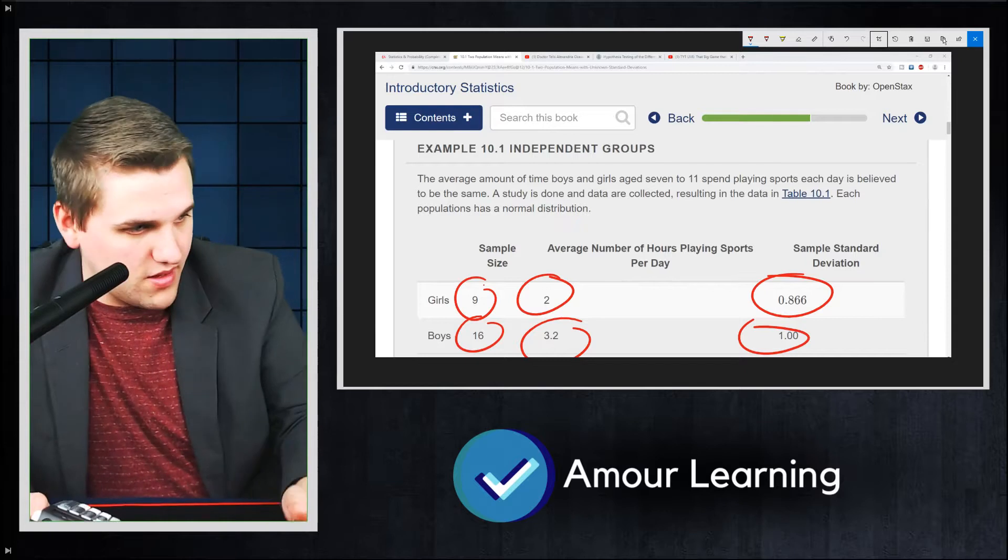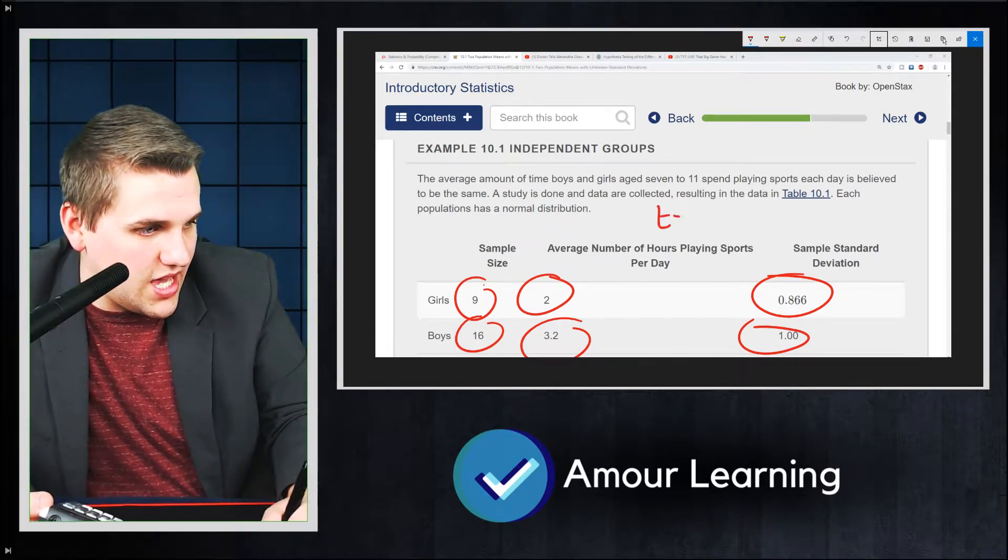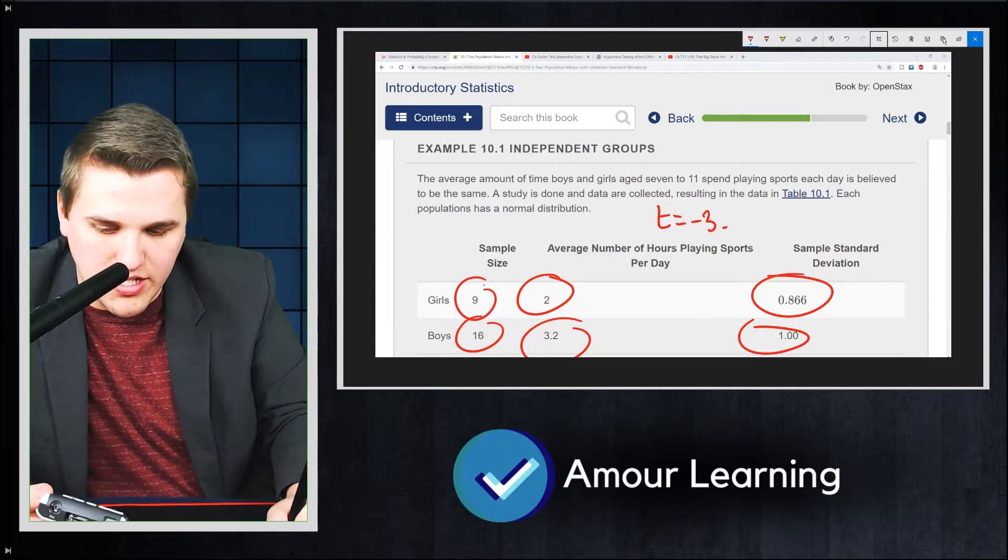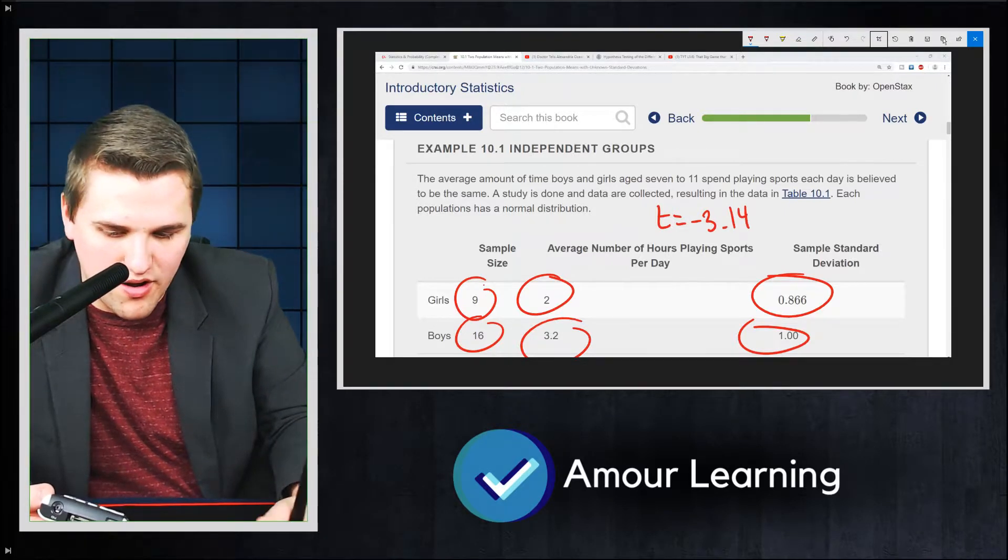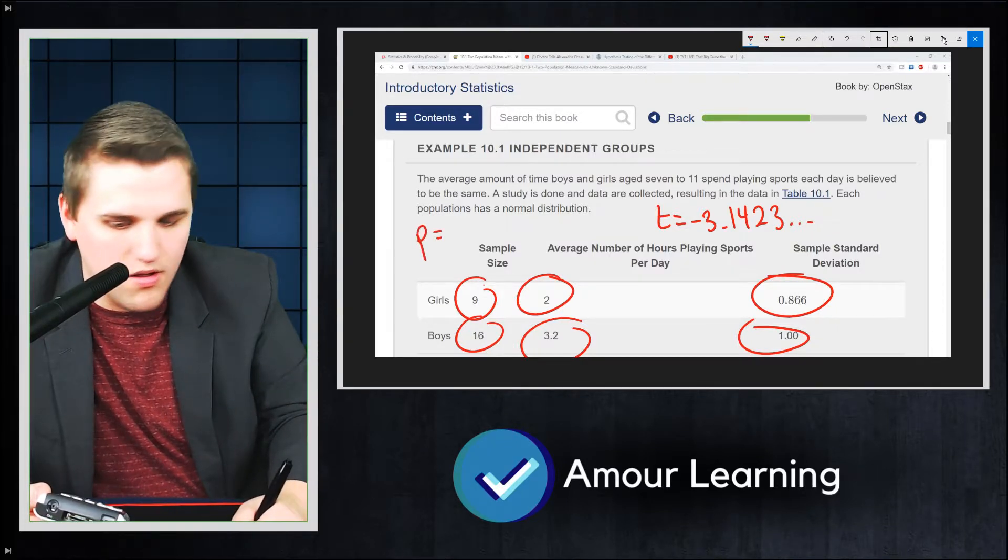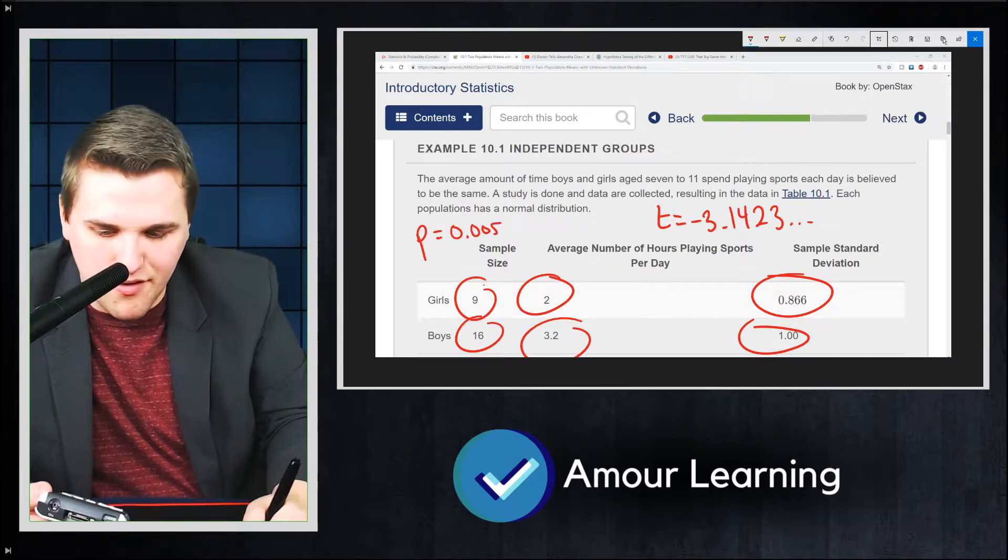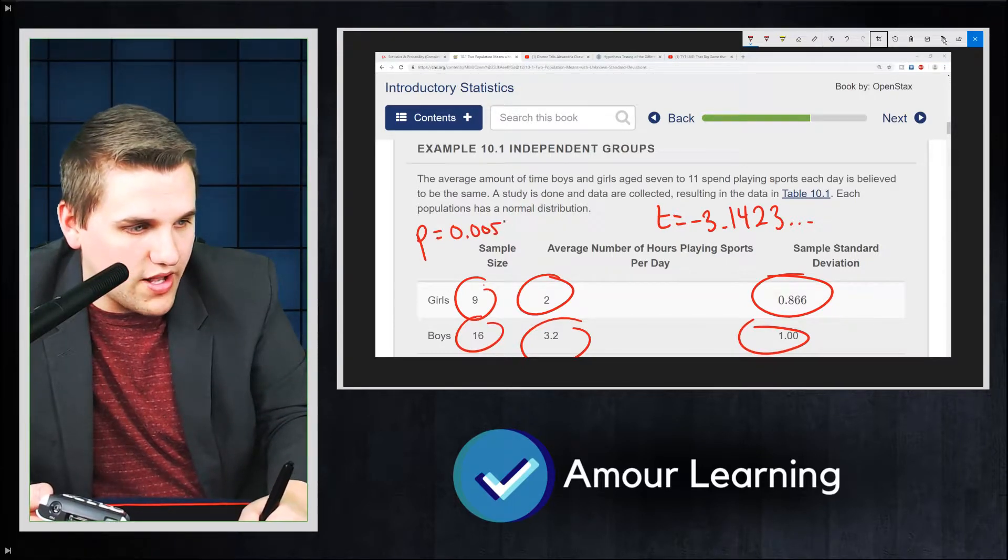Now I'm getting, in this case, I'll write it over here, t is negative 3.1423 and so on. And I'm getting a p-value of 0.0054 and so on.